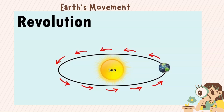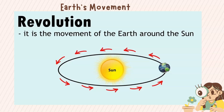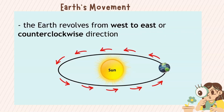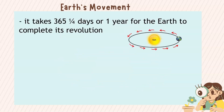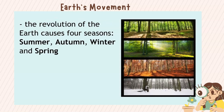Revolution. It is the movement of the Earth around the Sun. The Earth revolves from west to east, or counterclockwise direction. It takes 365 and one-fourth days or one year for the Earth to complete its revolution. The revolution of the Earth causes four seasons: summer, autumn, winter, and spring.